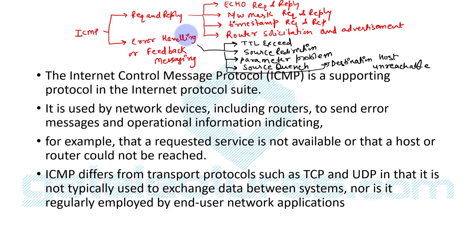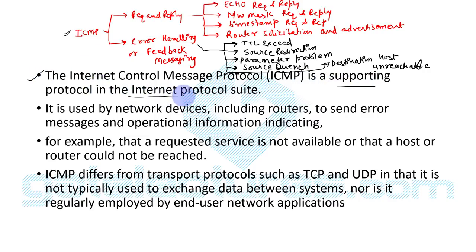We will discuss all of these one by one. The ICMP protocol is used for error handling in the network or for request and reply. It is a supporting protocol in the internet protocol suite, used by network devices including routers to send error messages and operational information — for example, indicating that a requested service is not available or that a host or router cannot be reached.